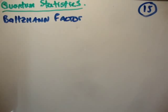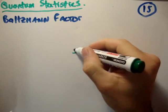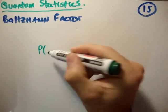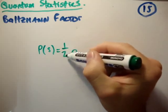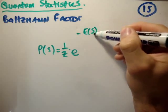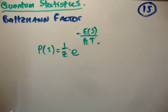In this video I'm going to continue on with my tutorials on quantum statistics. This is video number 15, and what we're going to do is derive the Boltzmann factor. The Boltzmann factor looks like this: the probability of state S occurring is equal to 1 over Z times e to the minus energy of the state divided by Boltzmann's constant and the temperature. So that's what we're going to derive.